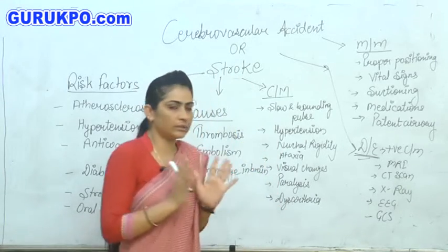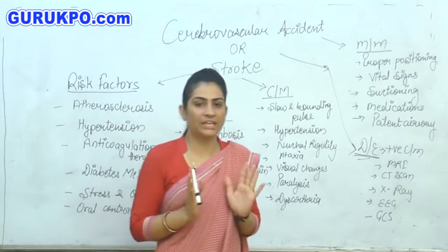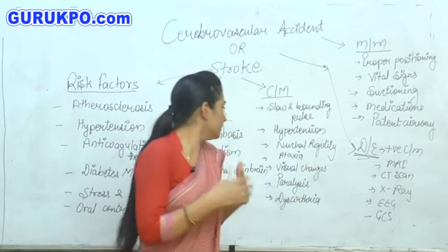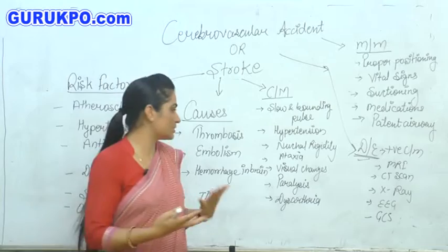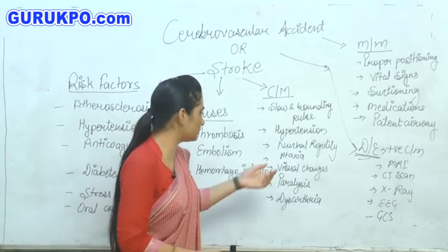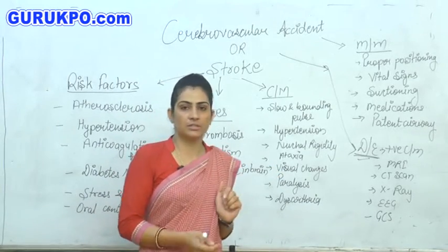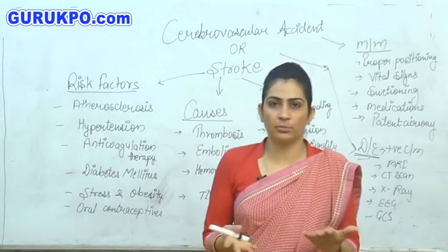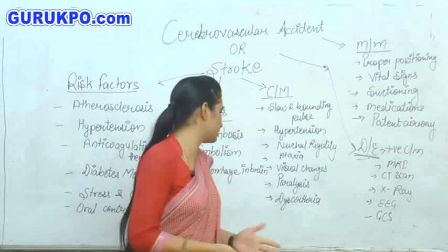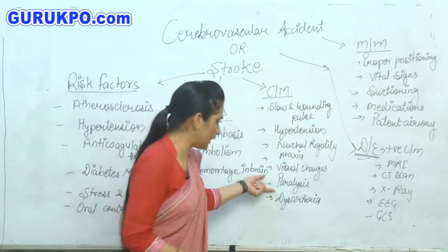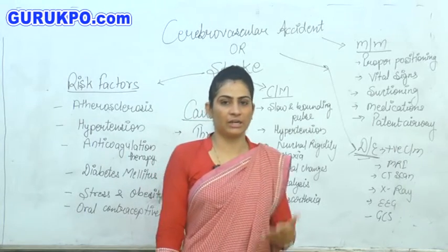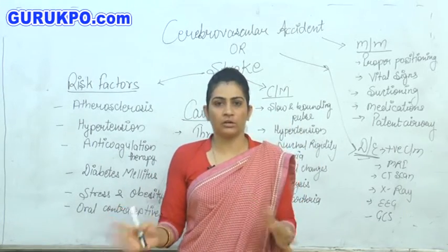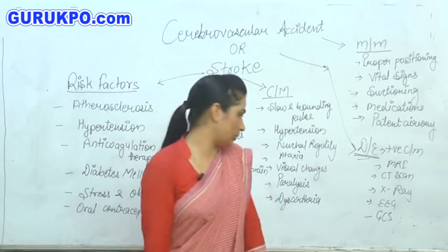Next one is ataxia — it is the abnormal and uncontrolled movement of the muscles. Next, the patient will face visual changes such as diplopia, blindness, or partial blindness. Next one is paralysis — the patient can undergo paralysis of the total body, one side of the body, or only the extremities of the body.